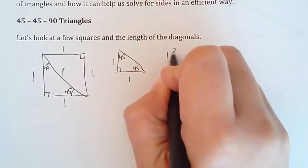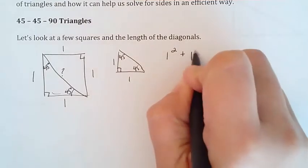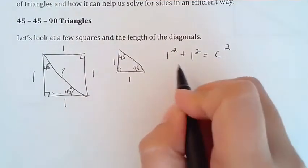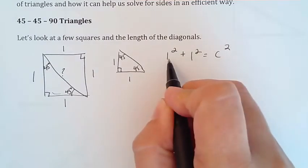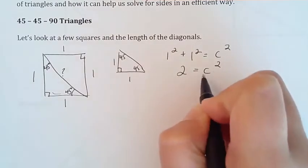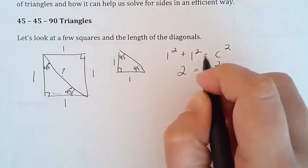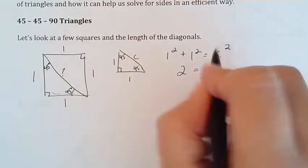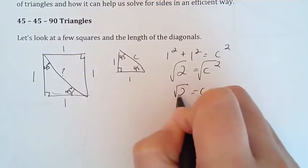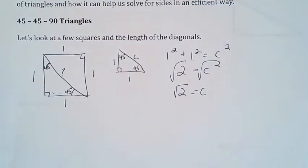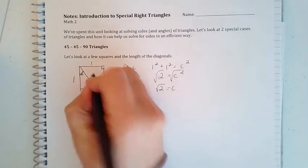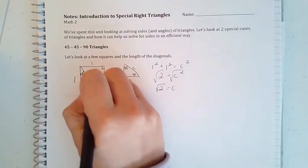If I do that, I get 1 squared plus 1 squared equals c squared. 1 squared is 1, 1 squared is 1, so that gives me 2. I want to know what c is, not c squared, so I'm going to square root both sides and leave this in simplified radical form. That means my diagonal equals root 2.